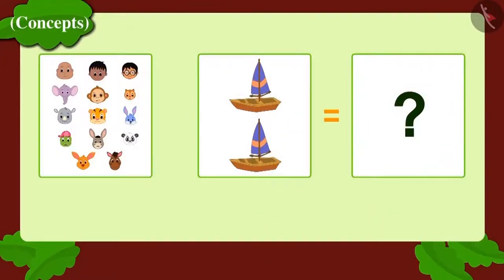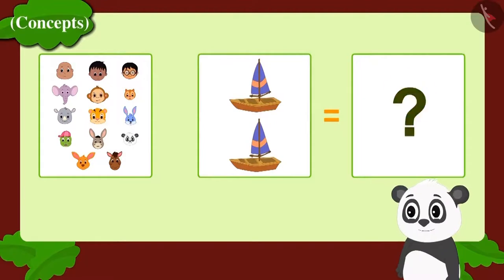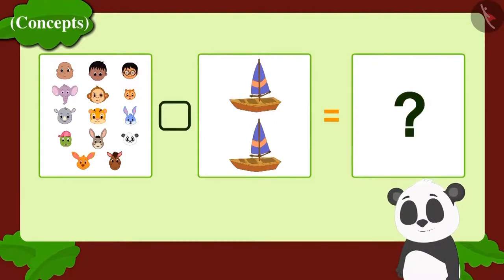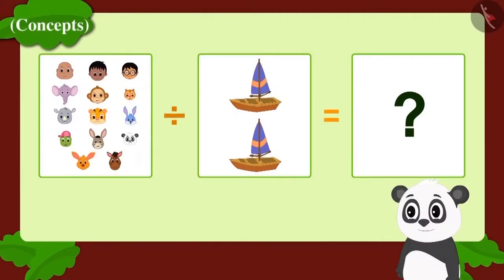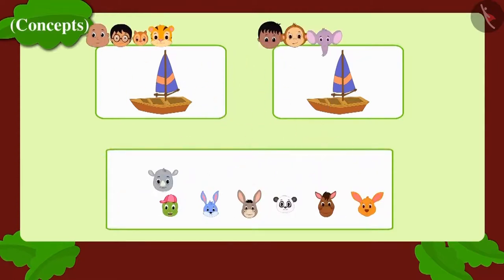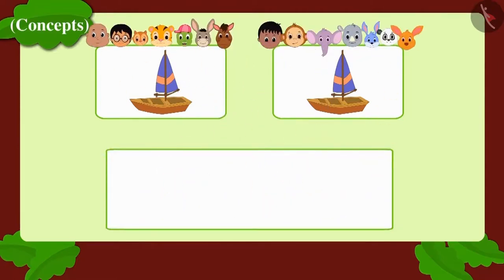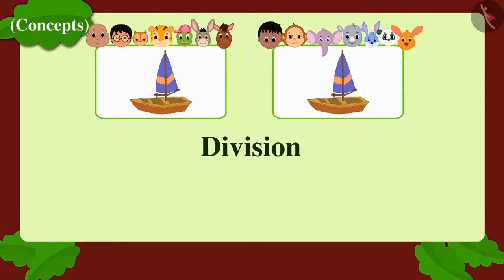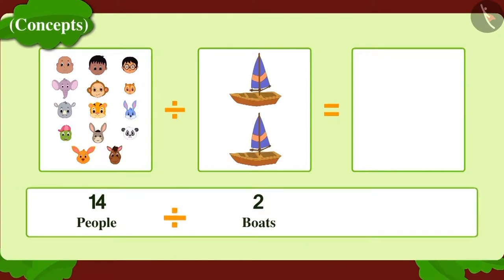Children, can you tell which method Golu needs to use to find this answer? Correct! Golu will have to use the method of division here. Whenever we need to divide objects equally between people or make equal groups, we use the method of division. Using division, Golu found that seven people could go in each boat.